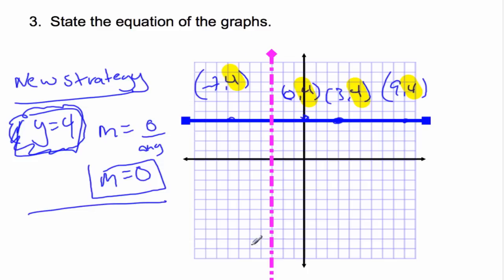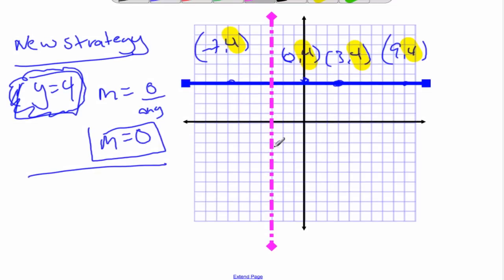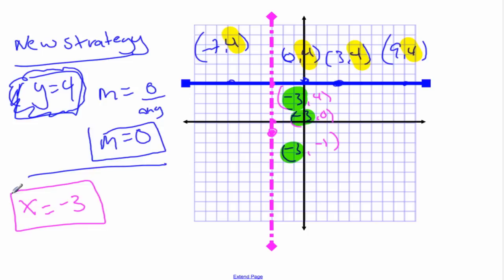Now, the vertical line. If I do the same kind of idea where I look at these points, this is the point negative 3 or negative 1. This is the point negative 3, 0. The point negative 3, 4. What's common about all those points now? Now it's the x value that's the same, the x coordinate. So, you can say for every point on that line, x equals negative 3. That's how we describe our line. And that is the equation. x equals negative 3. You just have to remember that vertical lines are x equals a number. Horizontal lines are y equal numbers.